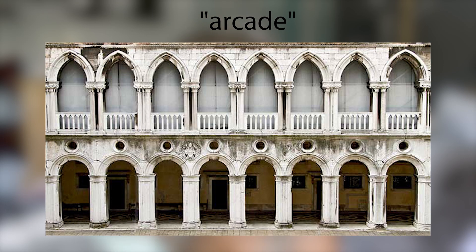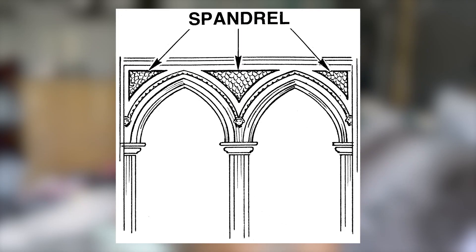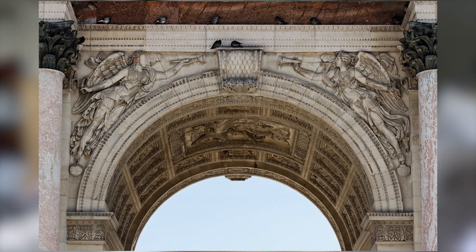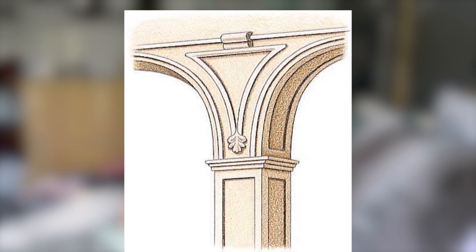Rows of arches are called an arcade. Spandrels in an arch refer to the curved, typically ornamented space between two adjacently constructed arches.